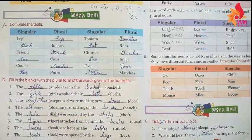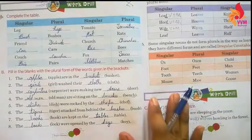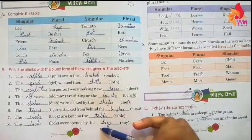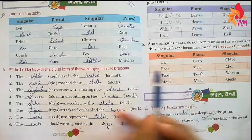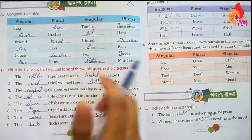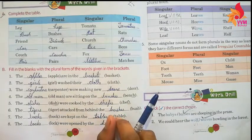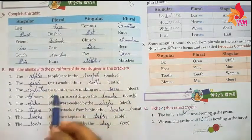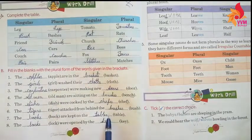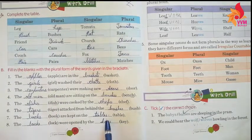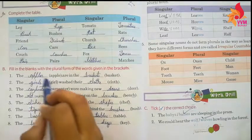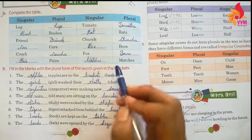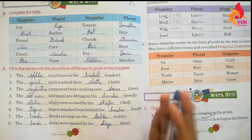Isi tarah se aapko ye table fill karni hai. Next, question b mein kya karna hai: aapko jo blanks diye hain, un blanks ke saath bracket mein jo singular nouns diye hain, unko plural mein change karte hue in blanks ko fill karna hai.